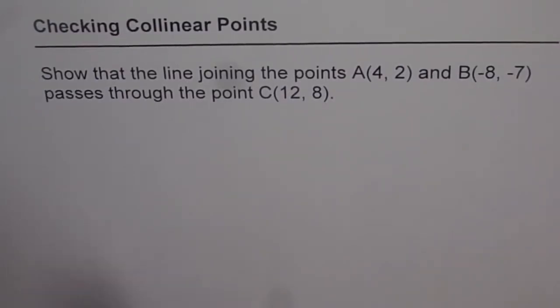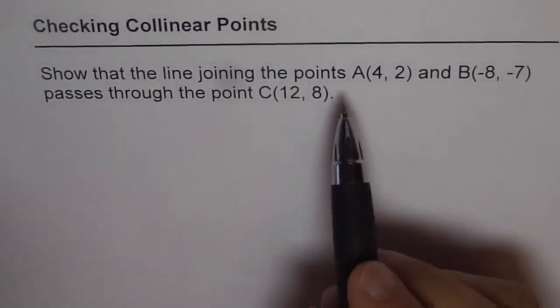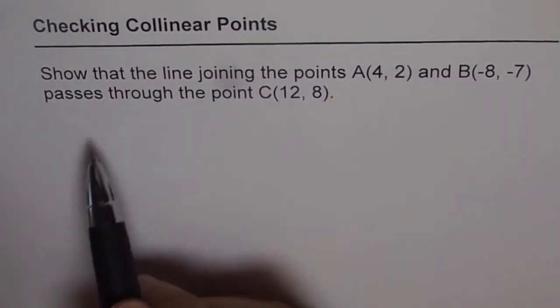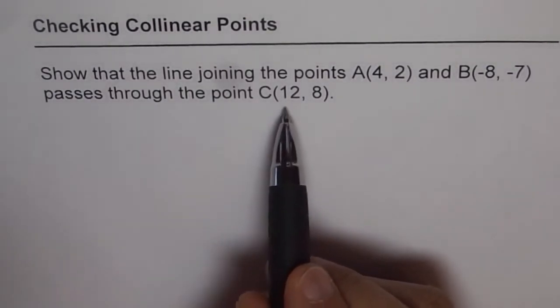Checking collinear points. Show that the line joining points A(4, 2) and B(-8, -7) passes through the point C(12, 8).